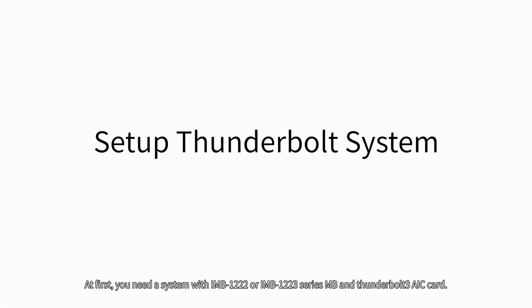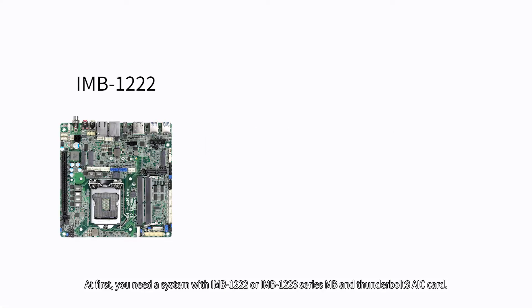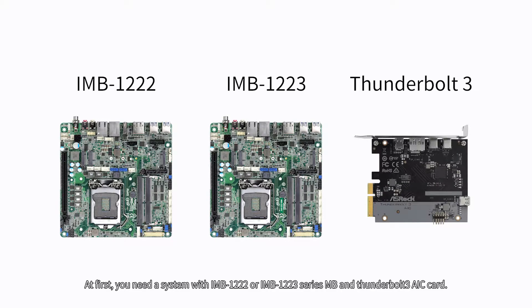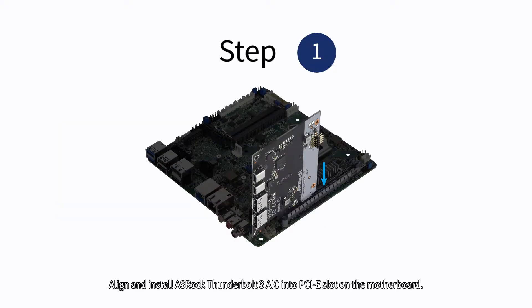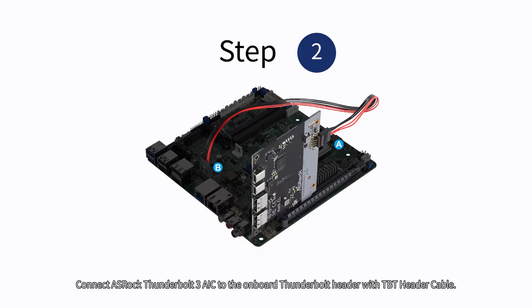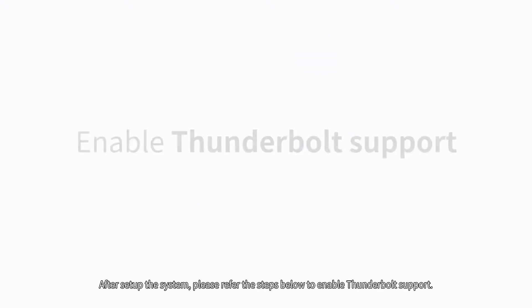First, you need a system with IMB1222 and IMB1223 series motherboard and Thunderbolt 3 AIC card. Please refer to the steps below on the screen to build up the Thunderbolt system. Step 1: Install Azraq Thunderbolt 3 AIC card into the PCIe slot on the motherboard. Step 2: Connect the Azraq Thunderbolt 3 AIC to the onboard Thunderbolt header with TBT header cable. After setting up the system, please refer to the steps below to enable Thunderbolt support.